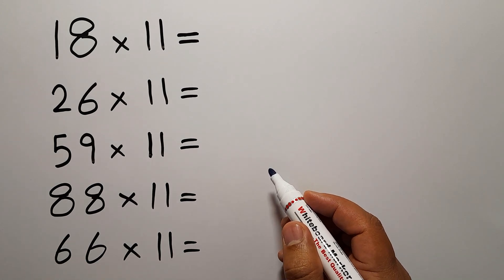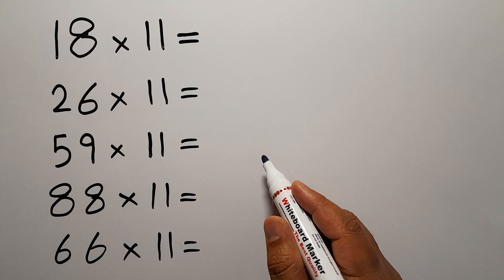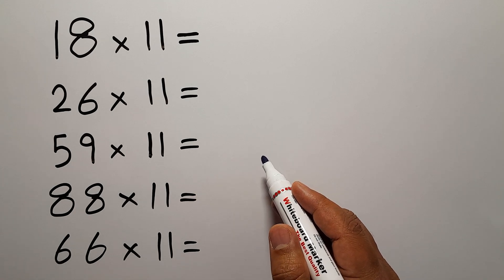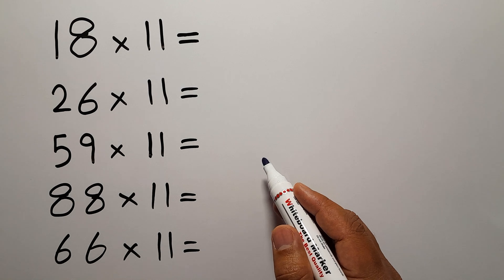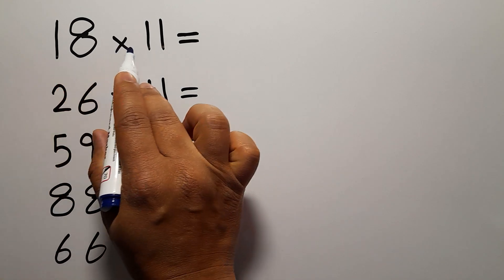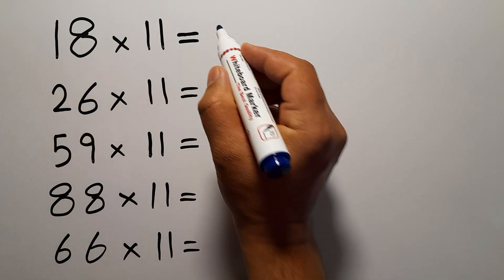Hello everyone, in this video we are going to learn a super fast trick to multiply a two-digit number by 11, even quicker than using a calculator. Are you ready? Let's get started. 18 times 11. So first write 1.